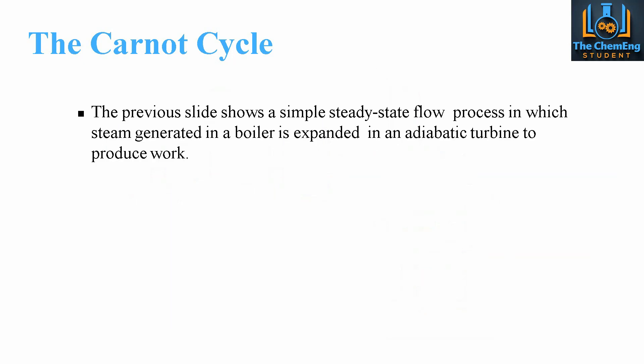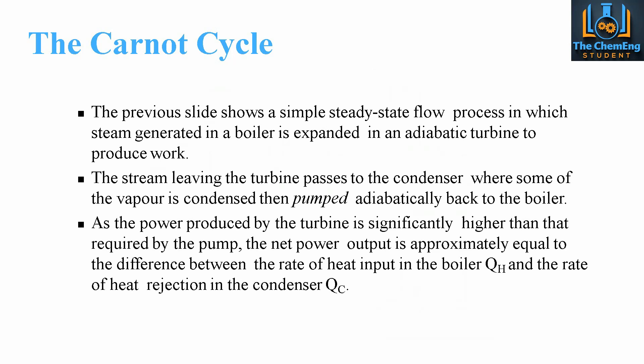This is the simplest of the steady-state flow processes, in which steam is generated in a boiler and expanded in an adiabatic turbine to produce work. The steam leaving the turbine passes through a condenser, where some vapor is condensed, and is then pumped adiabatically back to the boiler. The power produced by the turbine is sufficiently higher than that required by the pump, so the net power output is approximately equal to the difference between the rate of heat input in the boiler and the rate of heat rejection in the condenser.